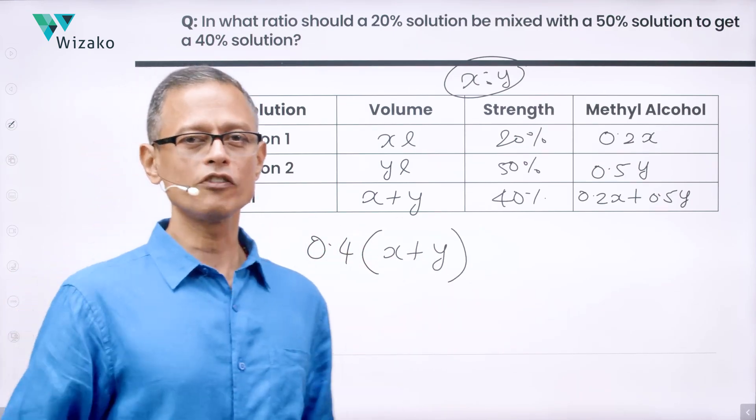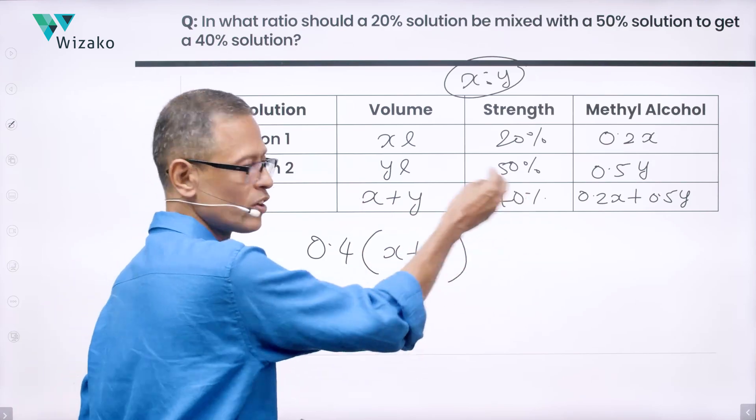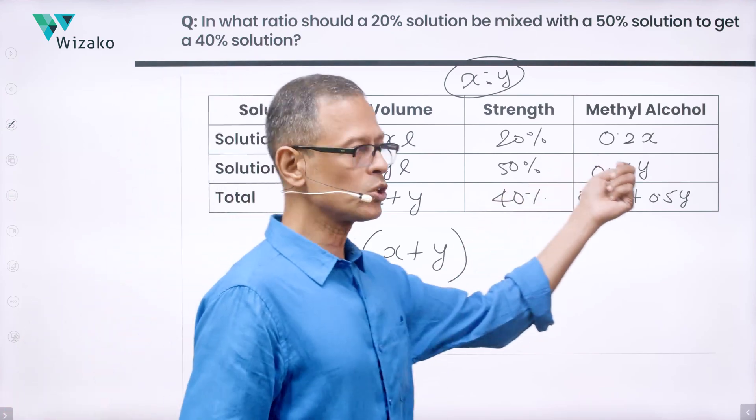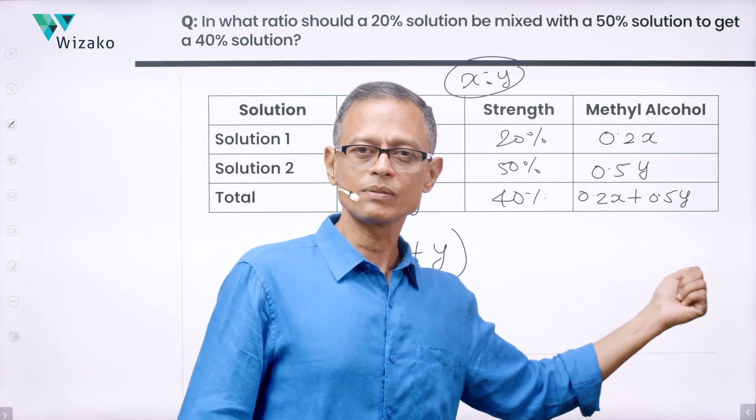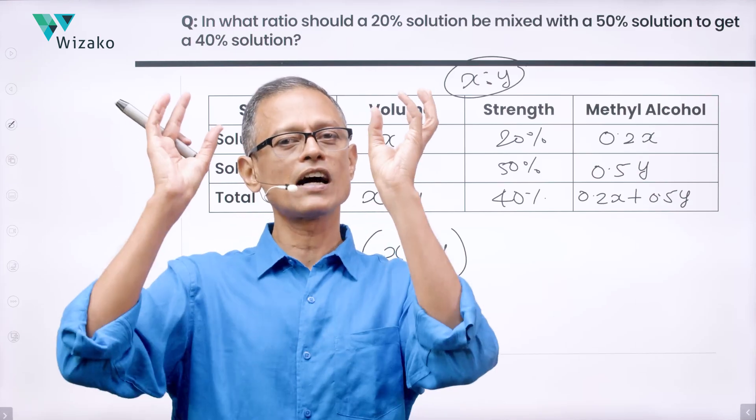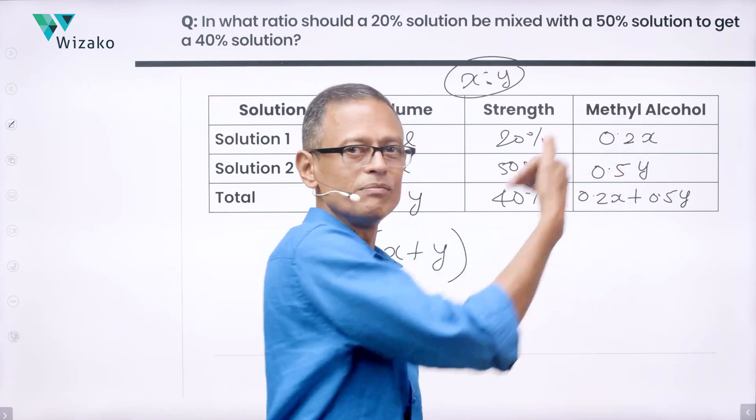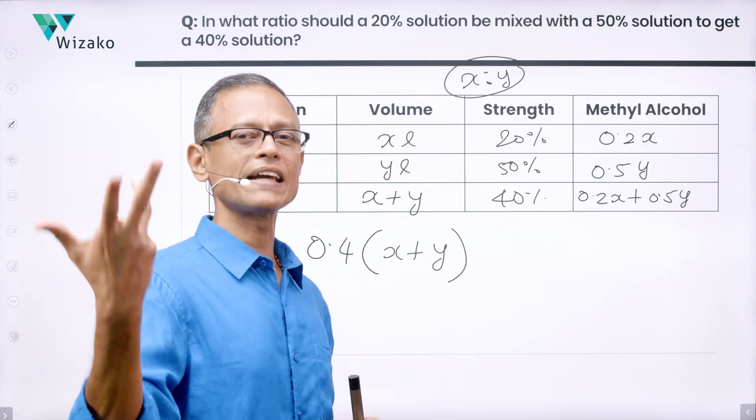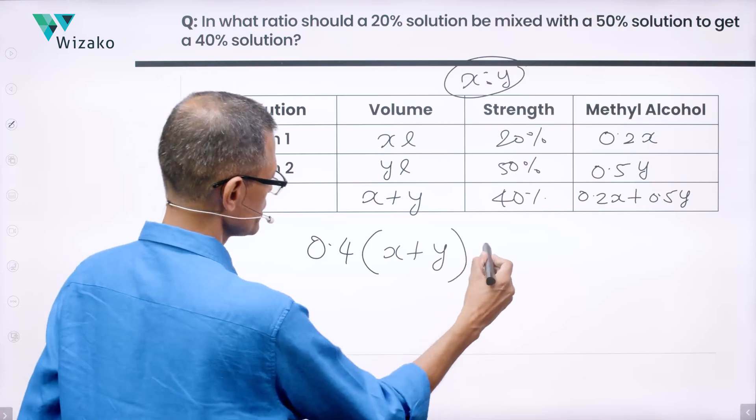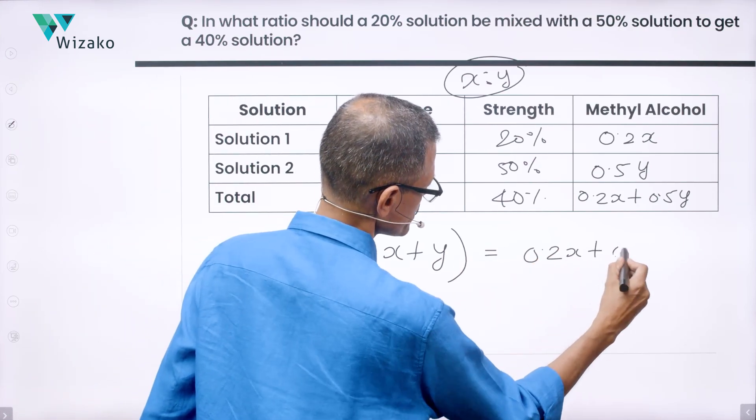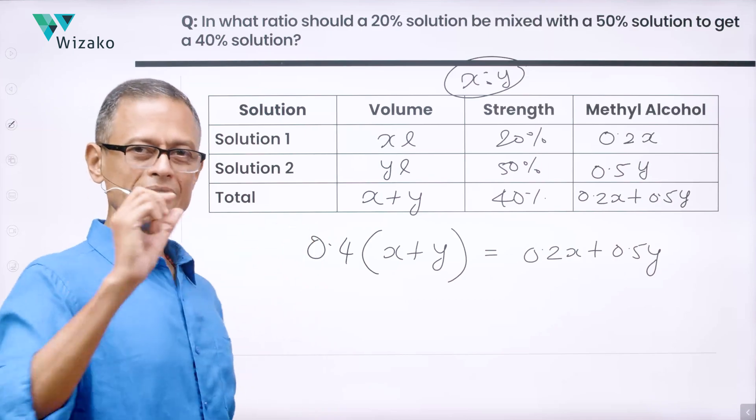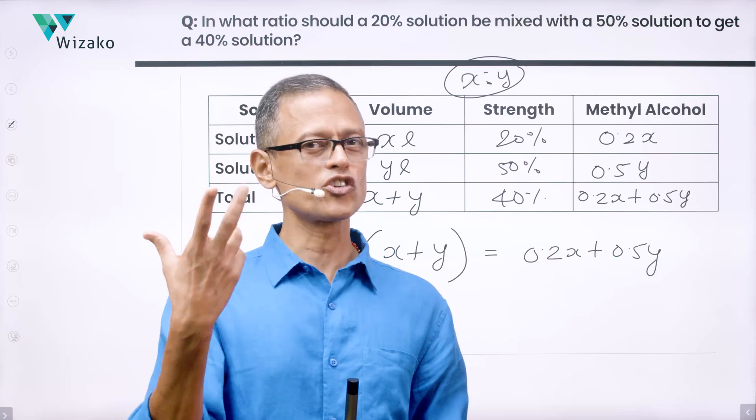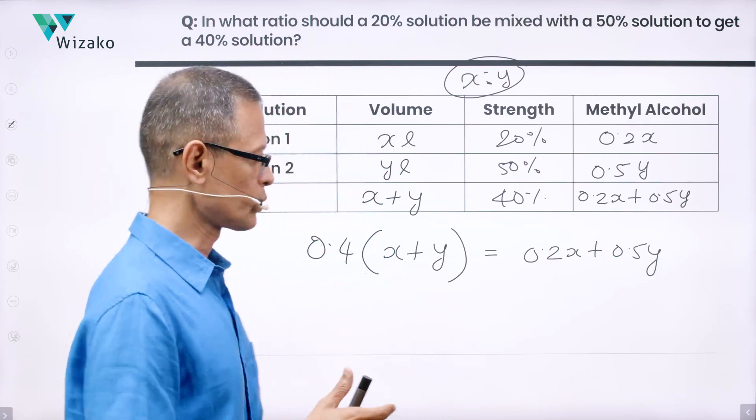When I look at it as the final concentration and final volume, this methyl alcohol that I'm talking about, where did it come from? 0.2x came from the first solution, 0.5y came from the second one. So the 0.2x plus 0.5y is the amount of methyl alcohol when I look at it as how I mixed it. This is the amount of methyl alcohol when I look at it as to how much I have it finally. These two should obviously be equal to each other. So this is equal to 0.2x plus 0.5y. Solve this. We have one equation in two variables. We're not trying to find out what is x, what is y. We're actually trying to find out x is to y, the ratio. We're actually trying to find out x upon y. Let's see how to go about it.